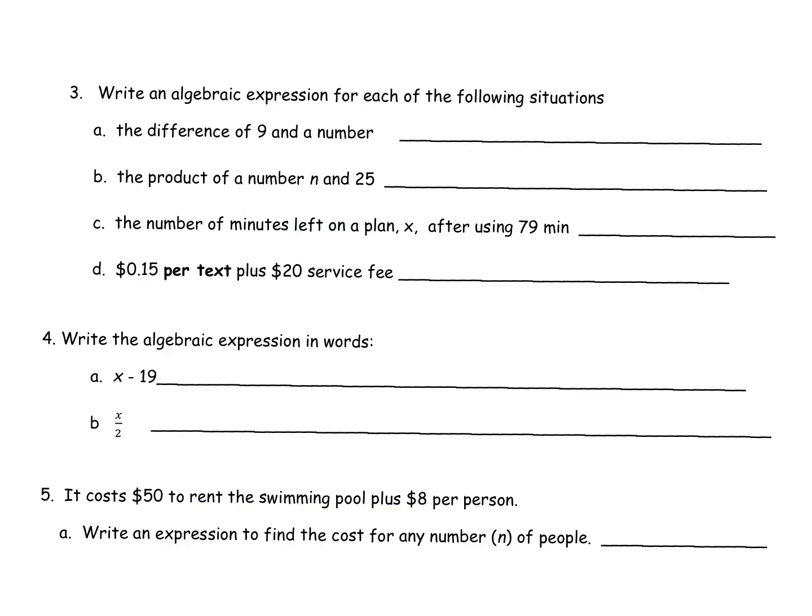For number 3 it says write the algebraic expression for each situation. Algebraic expression means math problem. So think about annotating as we read. Difference means to subtract, of 9 and a number. I don't know that number so we use a variable. So I'm going to subtract 9 minus a number which I'm going to call X because I don't know what it is. If you chose a different letter that's fine but you cannot put a number there, it has to be just a variable. The product which means to multiply, a number and they told us what letter to use, and 25. So they say multiply n and 25. Remember when we multiply a number and a variable we prefer the number than the variable just smushed together. So this first one's okay but the second one is the best answer.